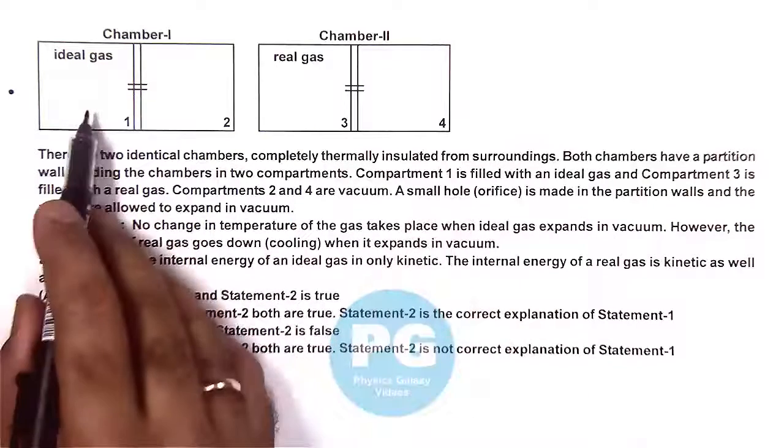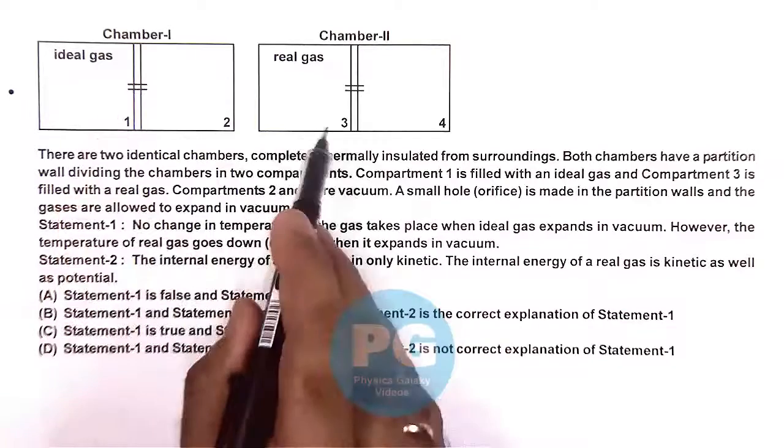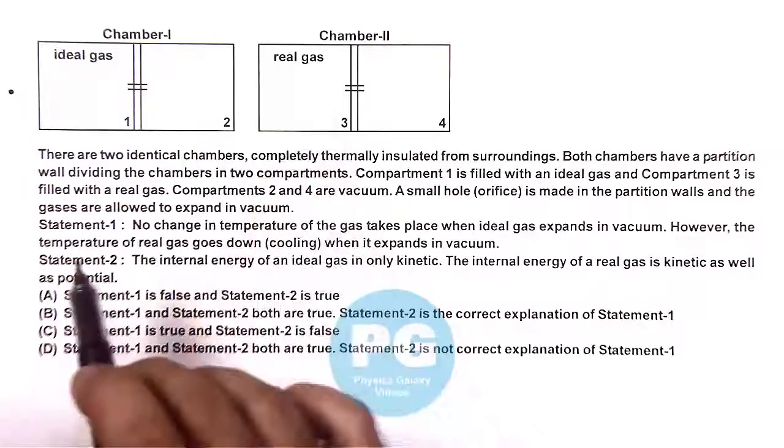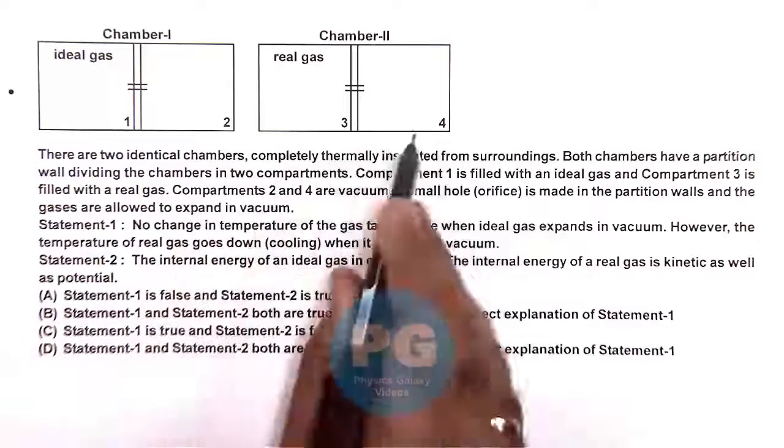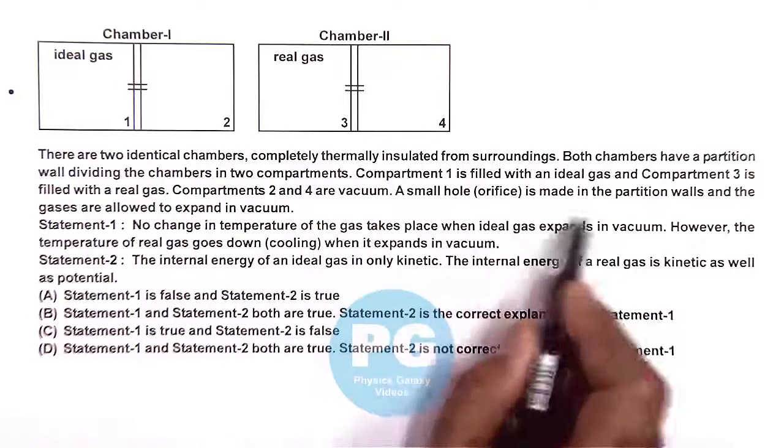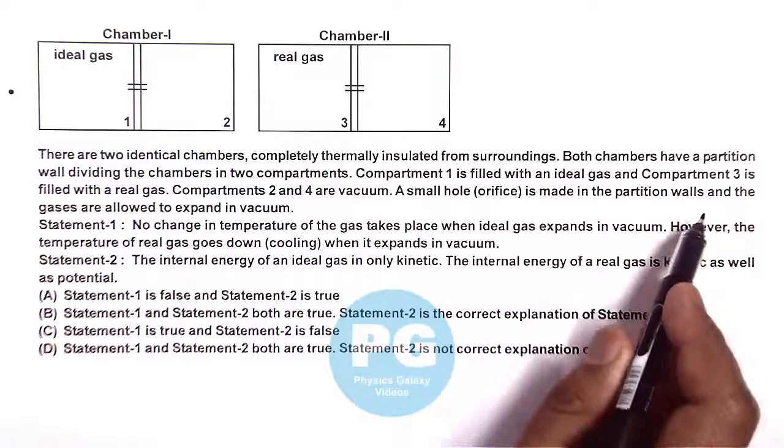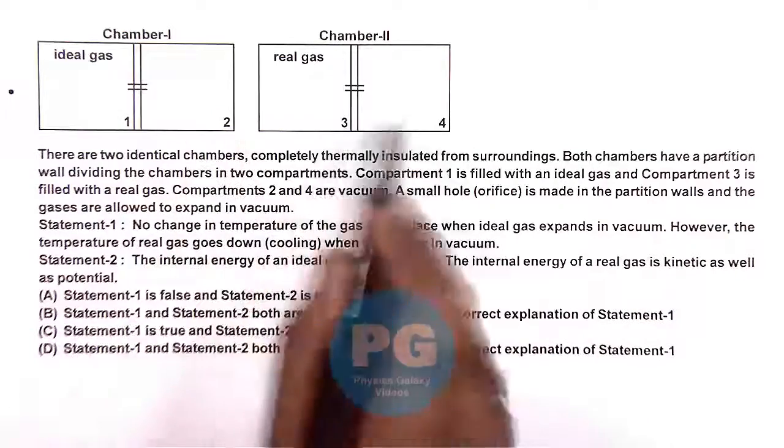Compartment one is filled with an ideal gas, and compartment three is filled with a real gas. Compartments two and four are vacuum, and a small hole is made in the partition wall, and the gases are allowed to expand in vacuum.